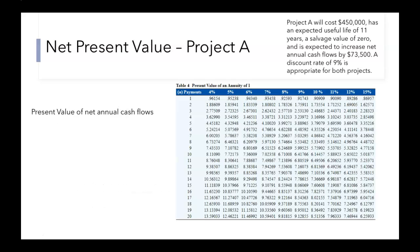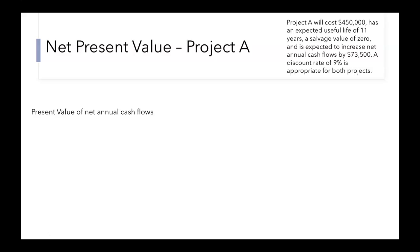Starting with Project A, we have a table of interest factors to find the present value of an annuity. Project A will increase annual cash flows by $73,500. We look at our number of years — the expected useful life of 11 years — circled down the left side. Up along the top is our 9% discount rate. Where they meet, it gives us an interest factor of 6.805. We take that $73,500 and multiply it by that interest factor, which tells us the present value of all cash flows throughout the 11 years is a little over $500,000.